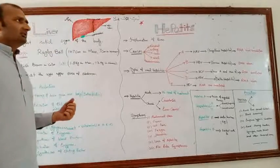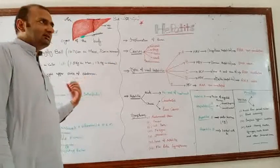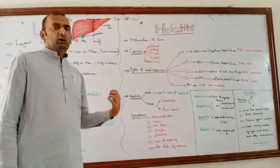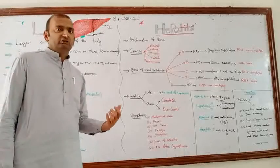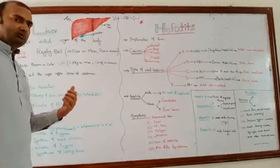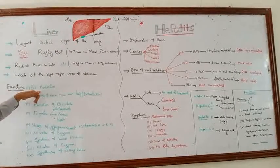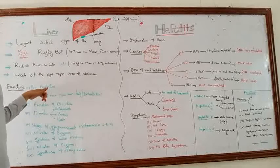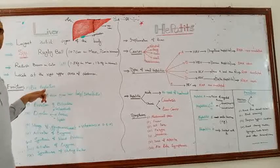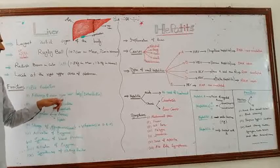The liver is the central station of metabolism. It performs more than 300 different functions. Some important ones are listed here. Number one is bile production — the liver is involved in the production of bile, which is involved in the digestion of fats.